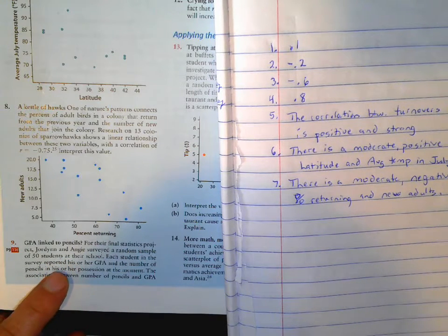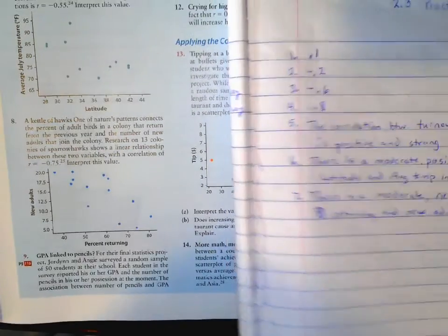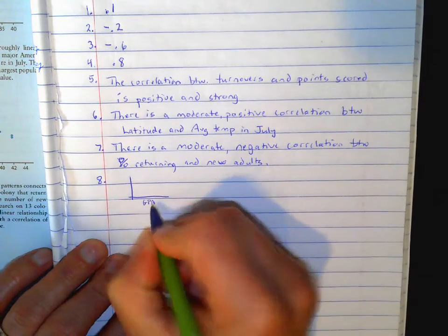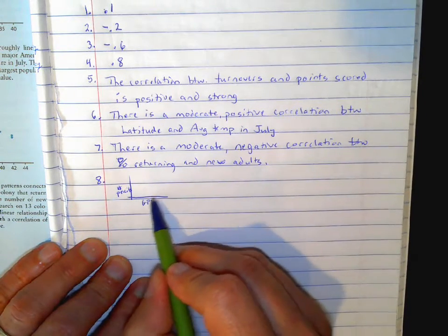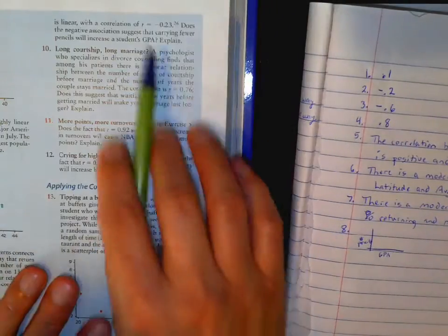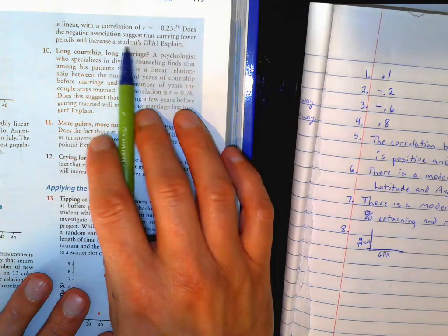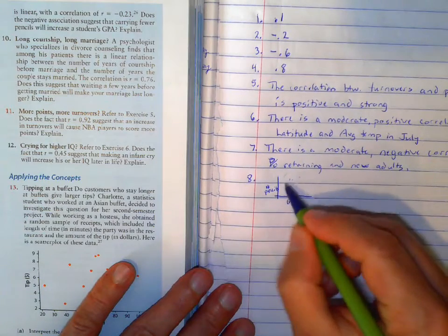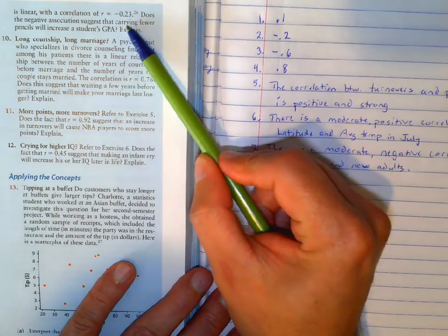So if you think about this, what they're doing here is they're looking at GPA and the number of pencils. If you think about what would that look like? Do you think if the GPA is higher, there'd be more pencils or less pencils? So it says here that the correlation was negative 0.23. Does the negative association suggest that carrying fewer pencils will increase a student's GPA?